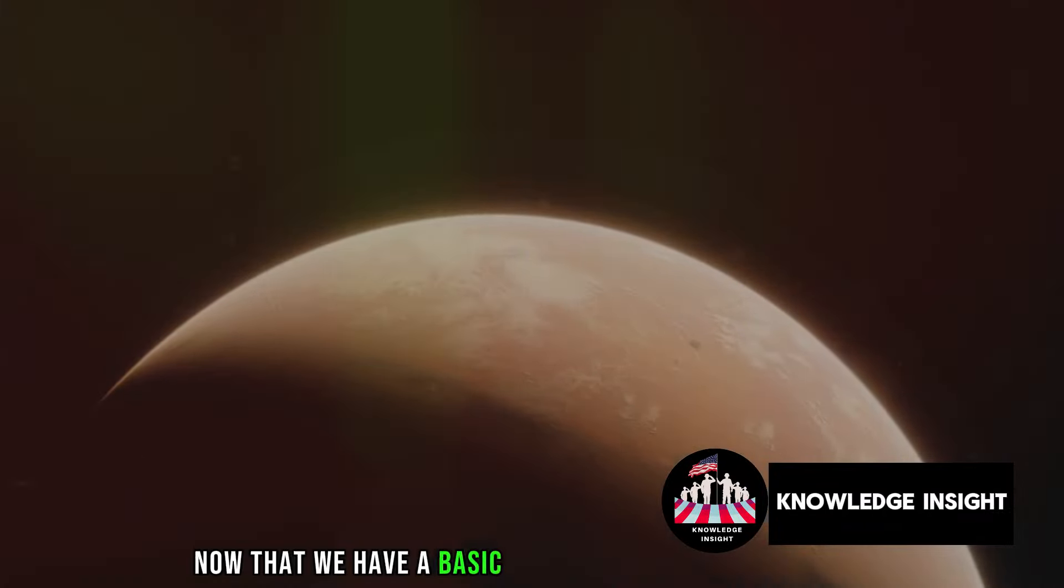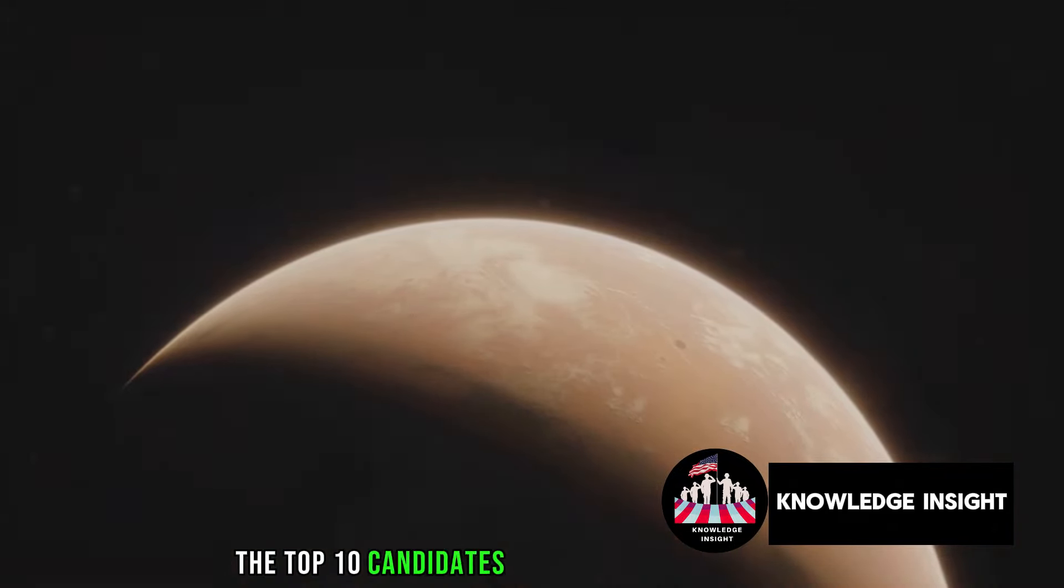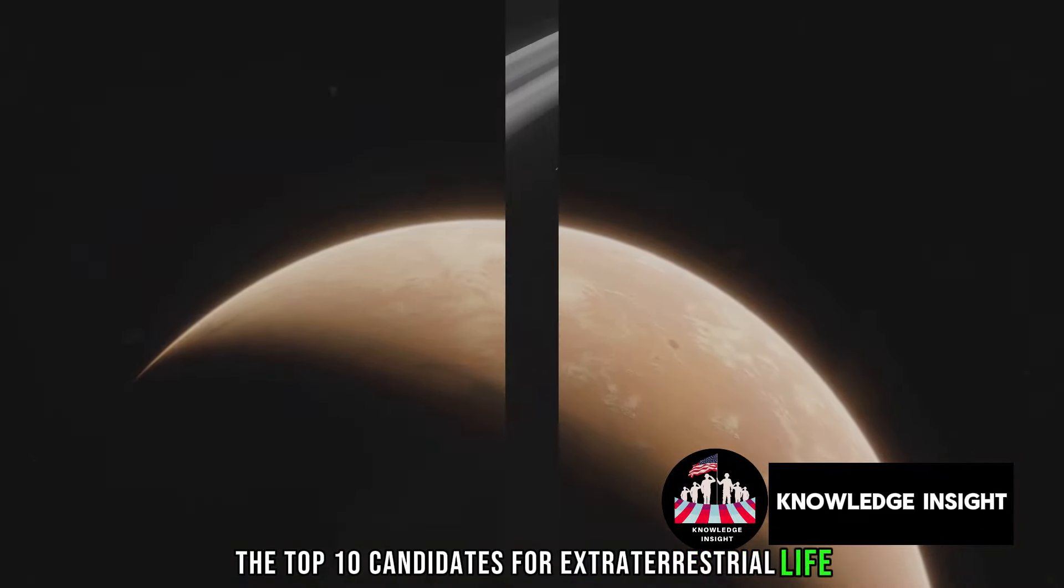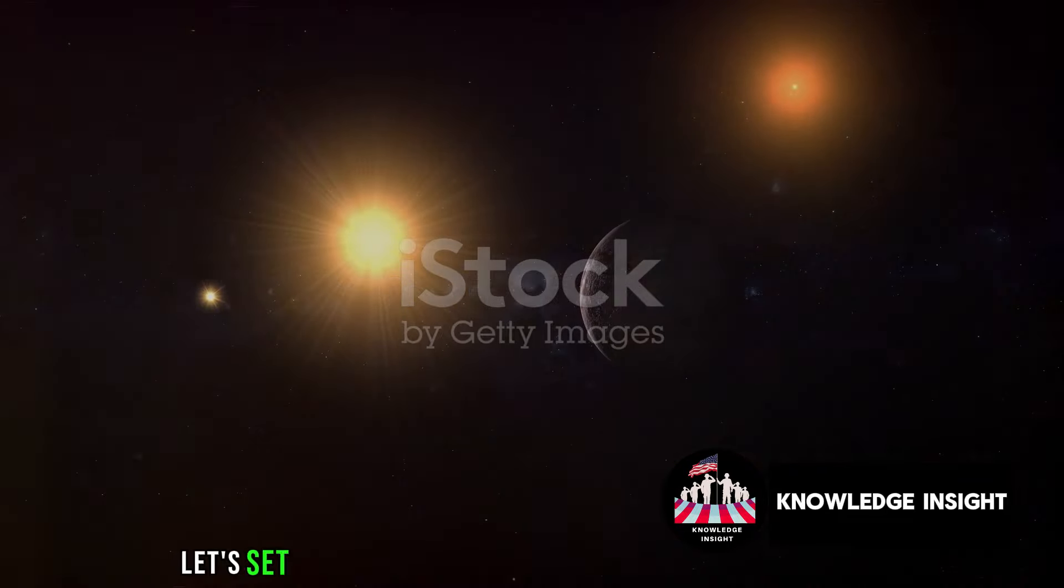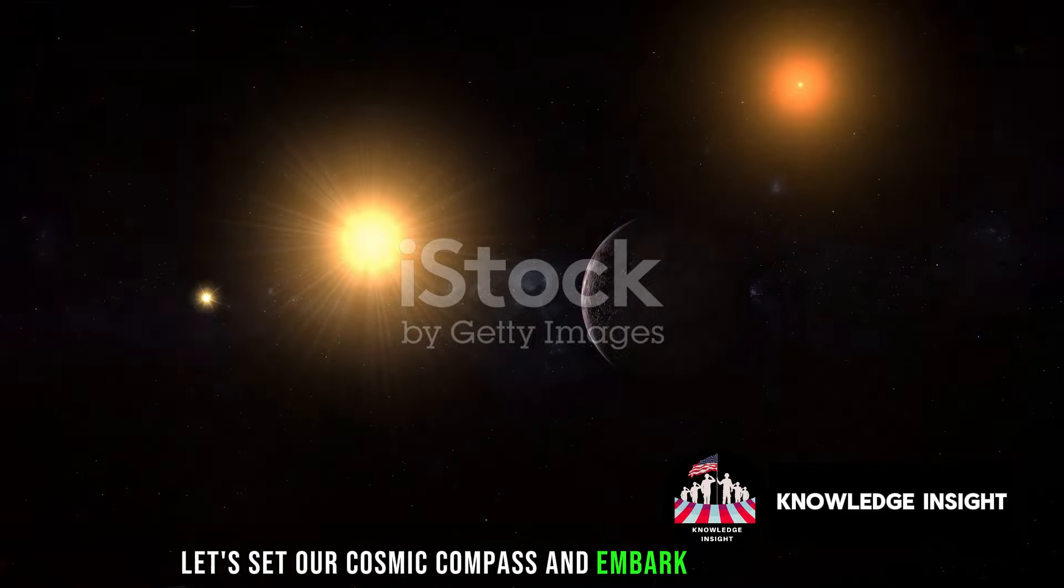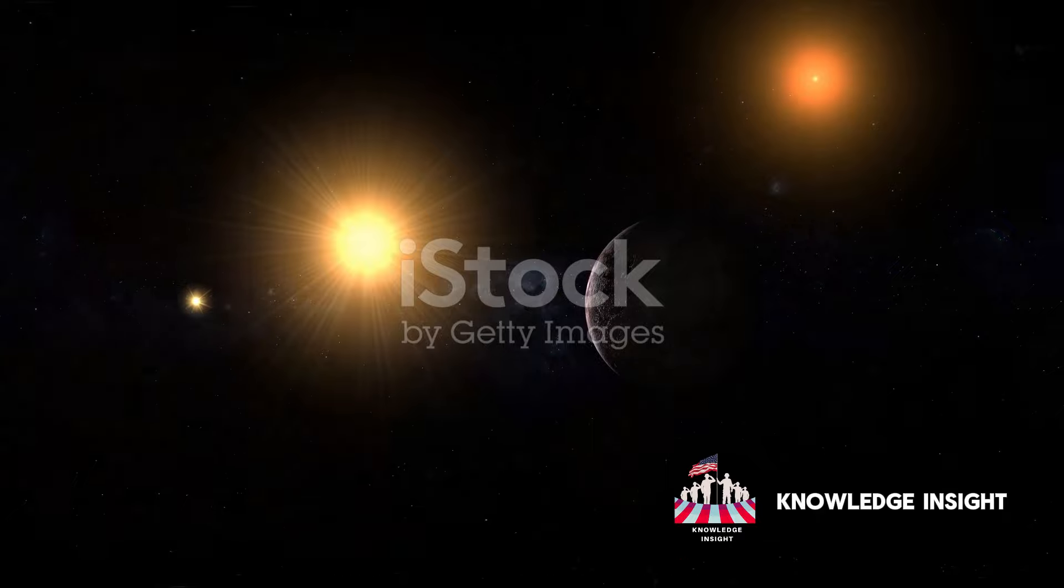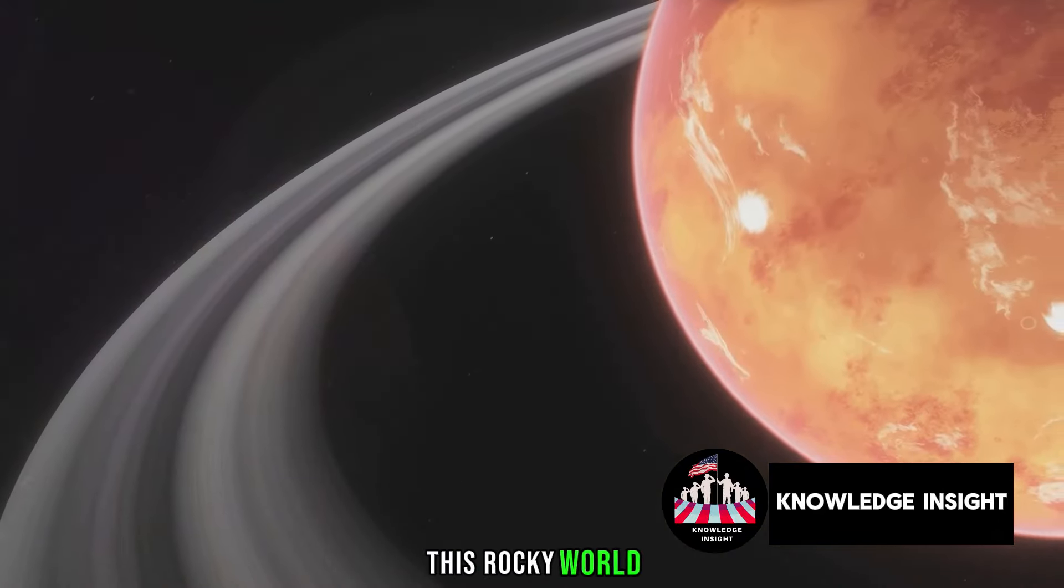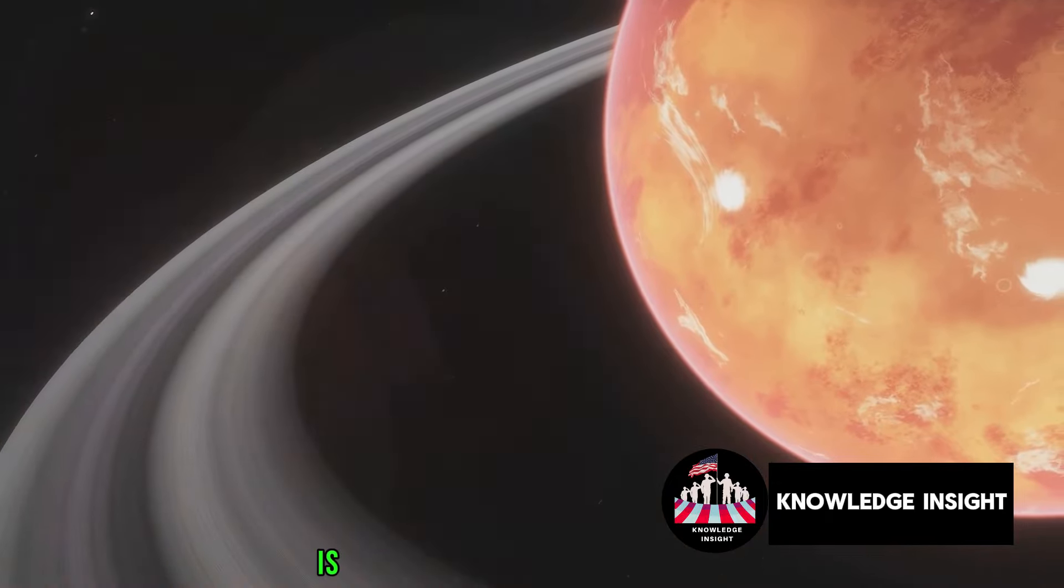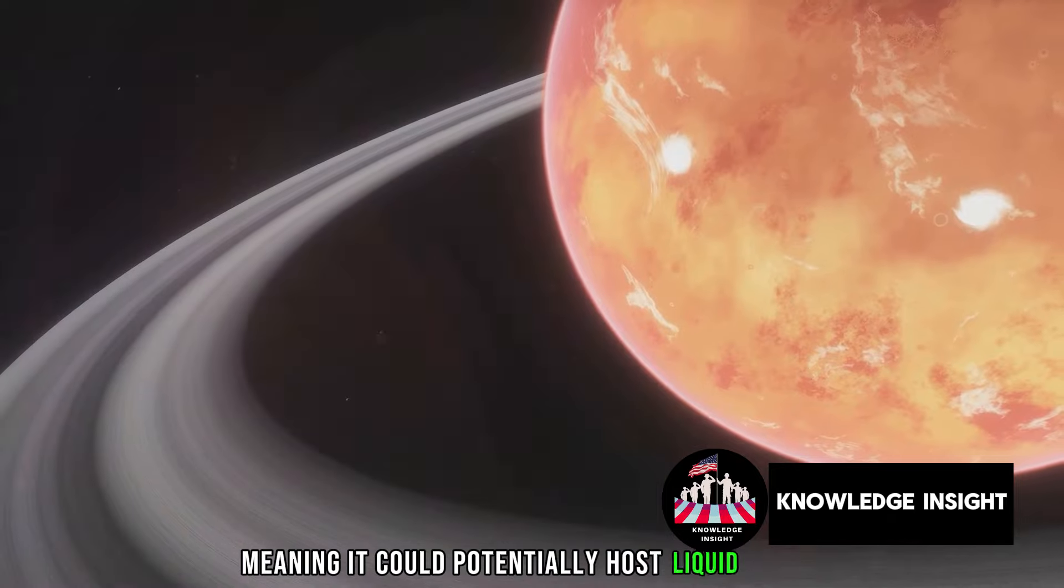Now that we have a basic understanding of exoplanets, let's explore the top 10 candidates for extraterrestrial life. Number 10 on our list is... Let's set our cosmic compass and embark on a journey to the distant corners of the galaxy, where we find Proxima Centauri b, the closest exoplanet to our solar system. This rocky world, only four light-years away, is in the habitable zone of its star, meaning it could potentially host liquid water, a key ingredient for life as we know it.